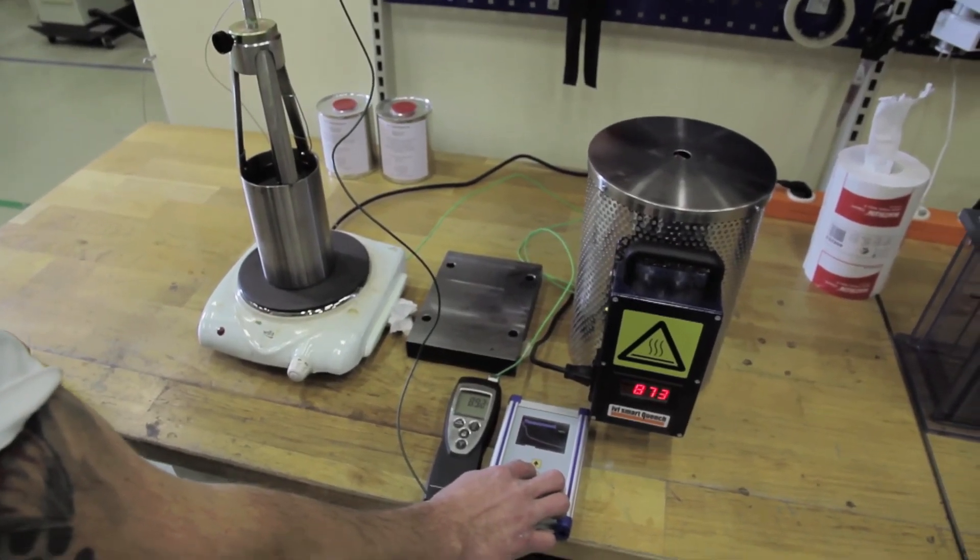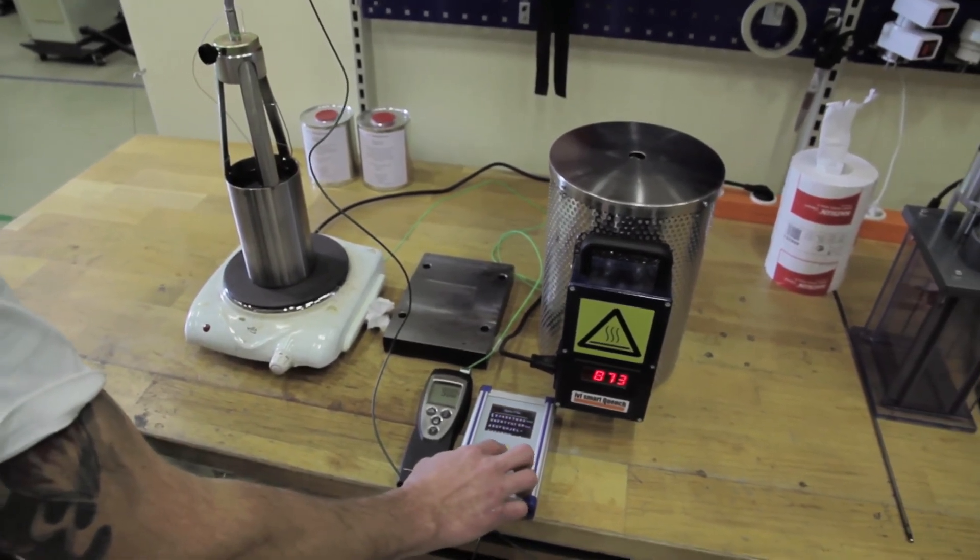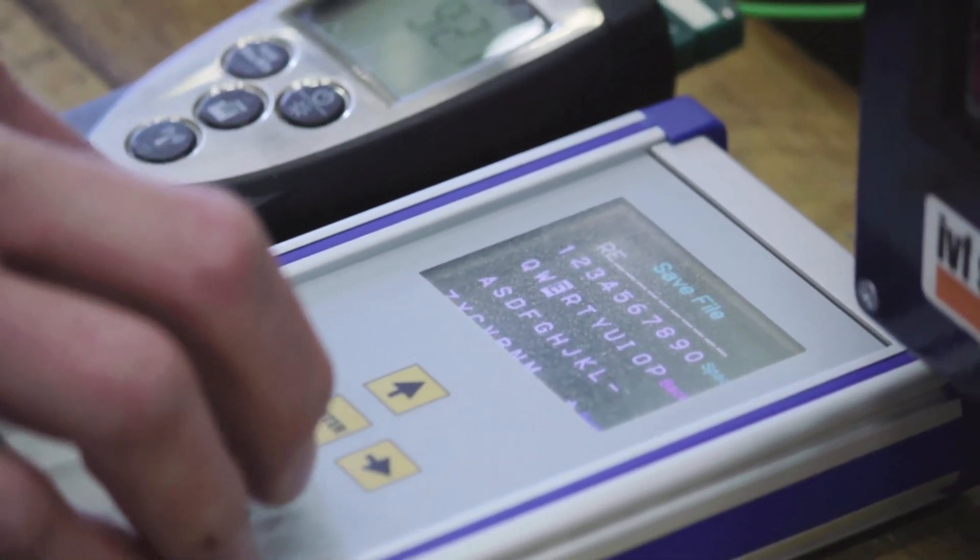When the measurement time has passed, you will be asked to save or delete the measurement. If you choose to save it, enter a file name for the cooling curve and press done to store it in the hand unit memory.